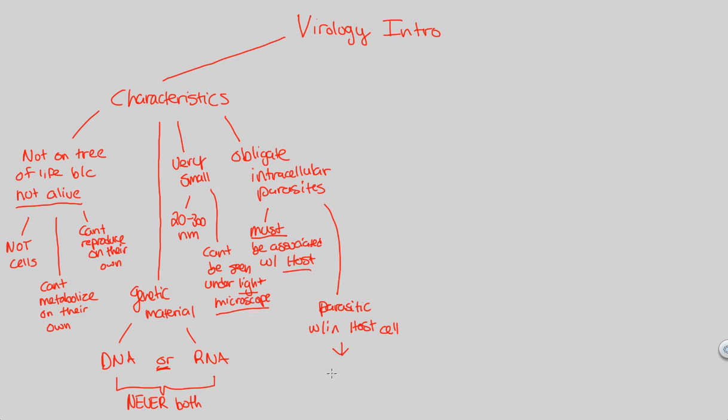If we remember from our ecological studies, this would be a plus-minus relationship, meaning somebody benefits and somebody doesn't. The virus is successful in metabolizing and reproducing because it has a host to manipulate and use, whereas the host is not happy because it has to give up its machinery. We'll look at that in greater detail as we move forward. So those are some major introductory characteristics of viruses.